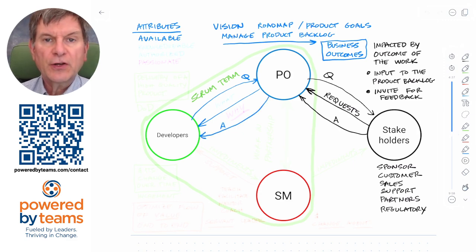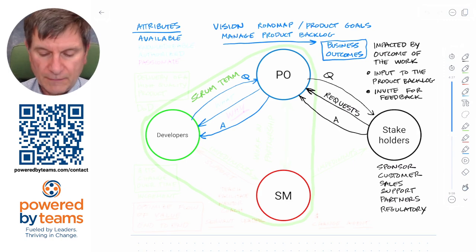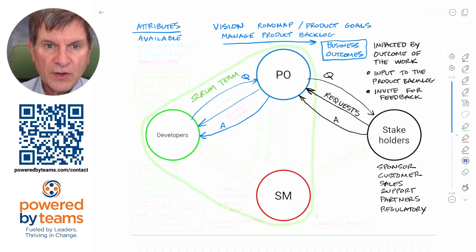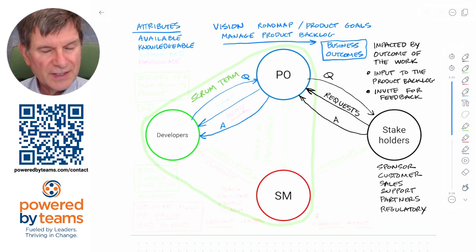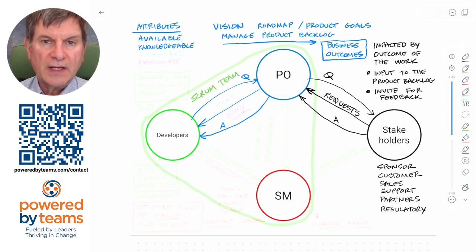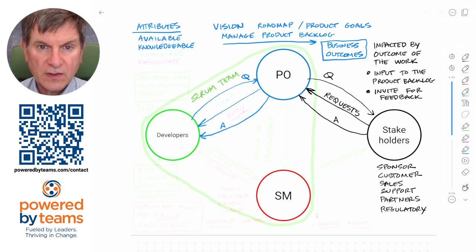You can figure a product owner is probably going to spend about a third of their time with stakeholders, about a third of their time with the team, and about a third of their time just thinking. Product owners also need to be knowledgeable — technical knowledge helps but is not strictly necessary. What a product owner really needs to be knowledgeable about is the customer and what the problem to solve is for that customer.